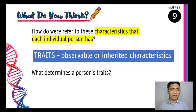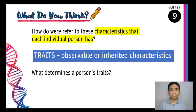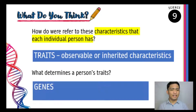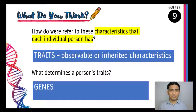The next question would be, what determines a person's traits? What tells us what the characteristics of a person will be? If you have answered genes, then you're actually correct. Genes determine what traits a person will have. But what does genes mean? Let's define what genes are.